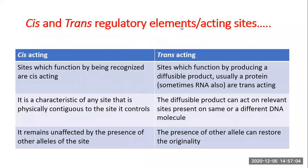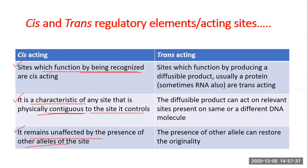CIS regulatory elements, or cis sites, are sites which function by being recognized — remember this: by being recognized. They are called cis-acting sites. Characteristically, they regulate genes which are adjacent or neighboring to them. It is a characteristic of any cis site that physical closeness is necessary to the site it controls, and it remains unaffected by the presence of other alleles of that site.